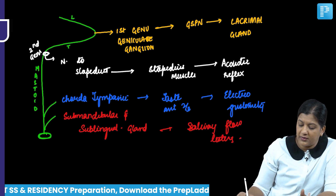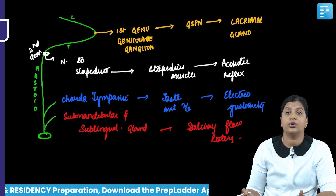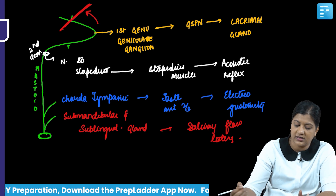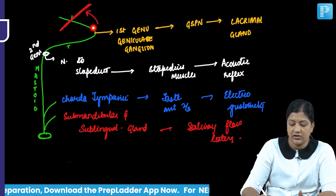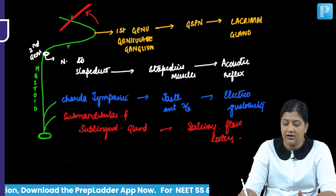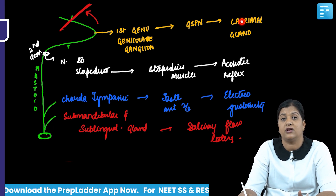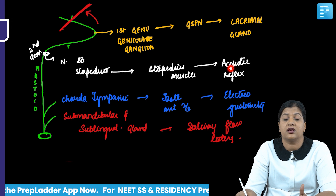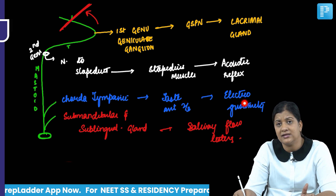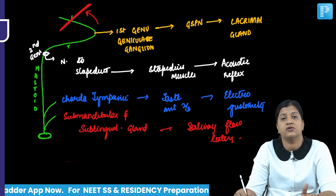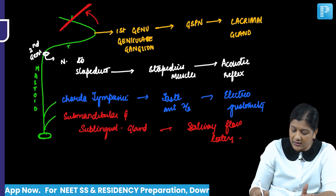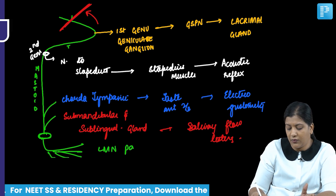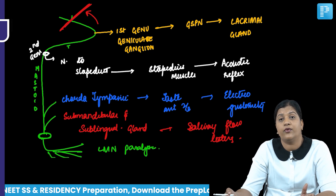If there is an injury above the level of the first genu or geniculate ganglion — a supra-geniculate lesion — no impulses conduct below it. Schirmer's test will show reduced lacrimation, the acoustic reflex will be absent, taste sensation will be lost, salivary flow will be reduced, and all five terminal branches supplying the face will show LMN-type facial paralysis.